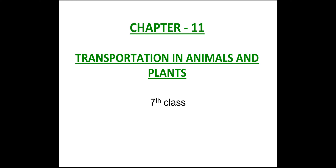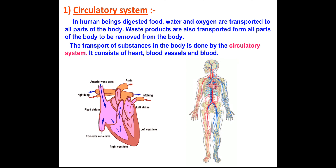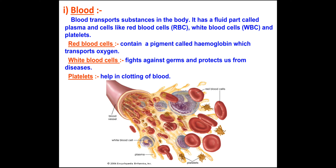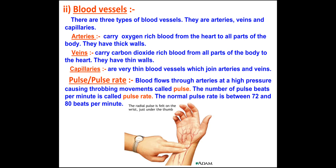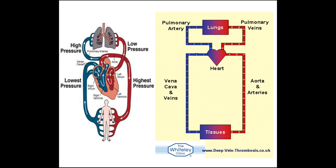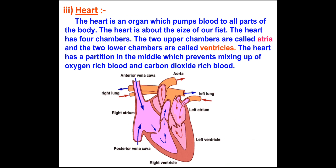Hello students, this is Chapter 11: Transportation in Animals and Plants. In the previous section you learned about the circulatory system — blood and its components: red blood cells, white blood cells, platelets, and plasma. You also learned about blood vessels — arteries, veins, and capillaries — pulse rate, and information about the heart. The heart is a very delicate organ which pumps blood to all parts of the body, and its size is like our fist.